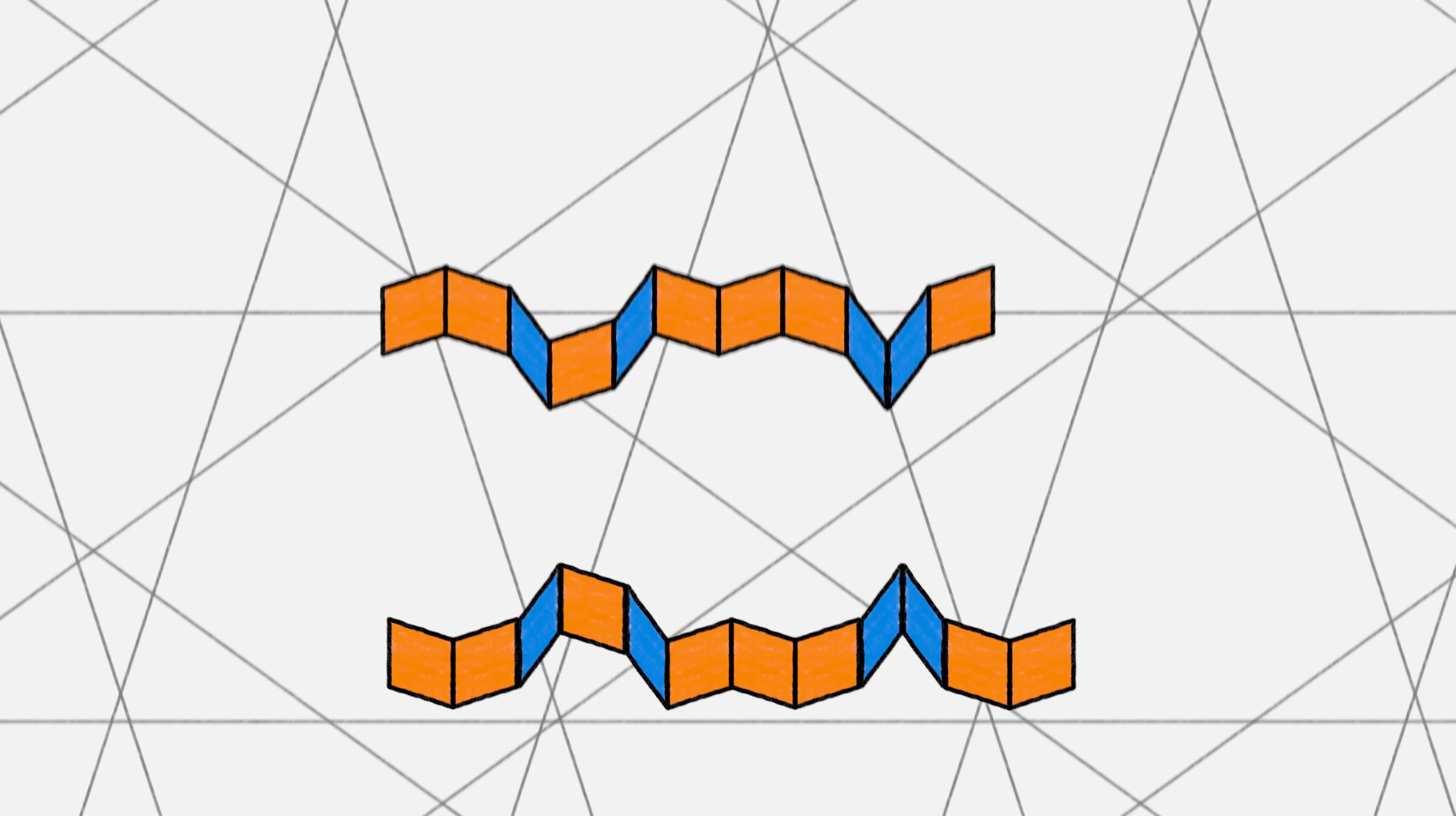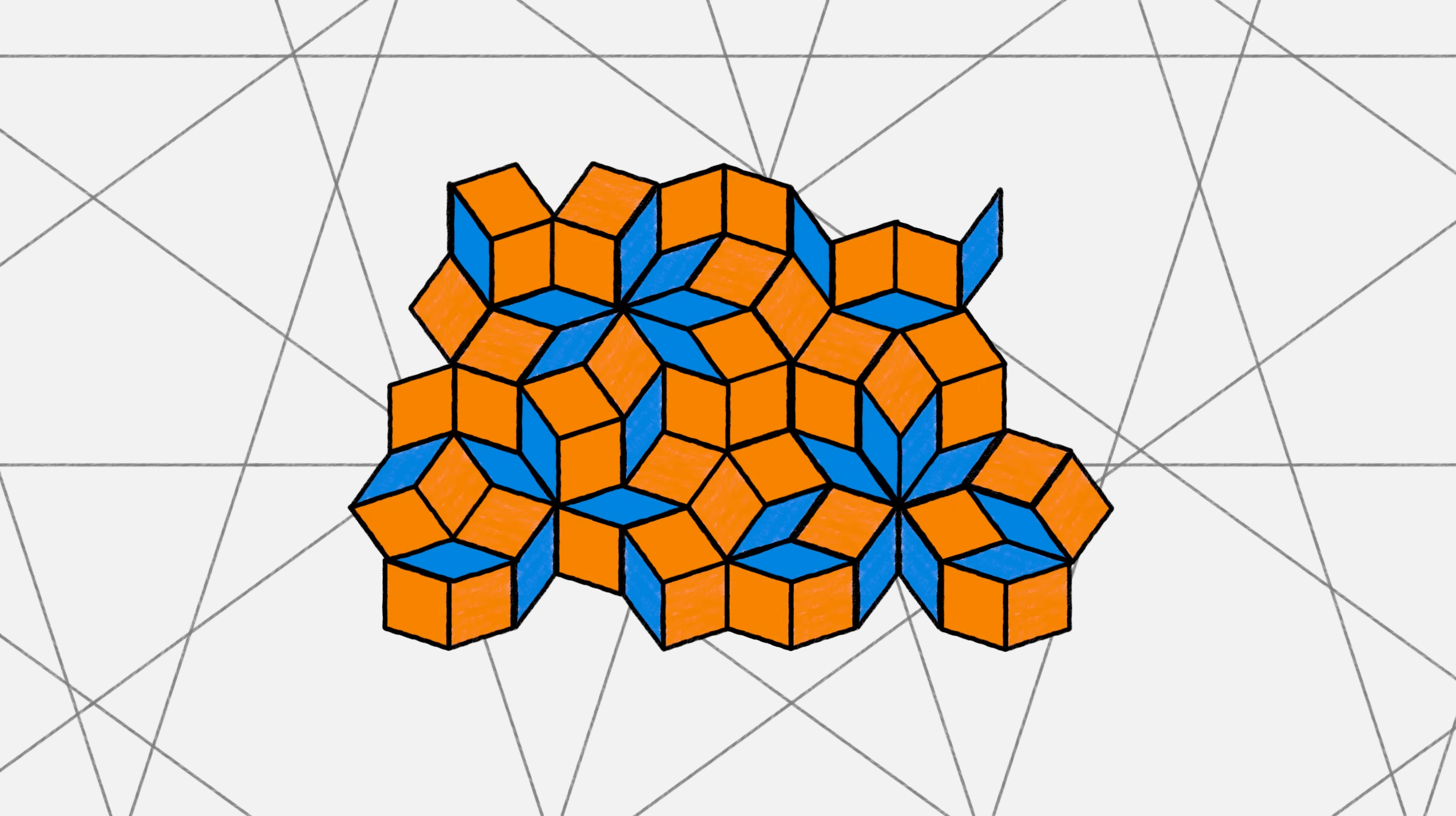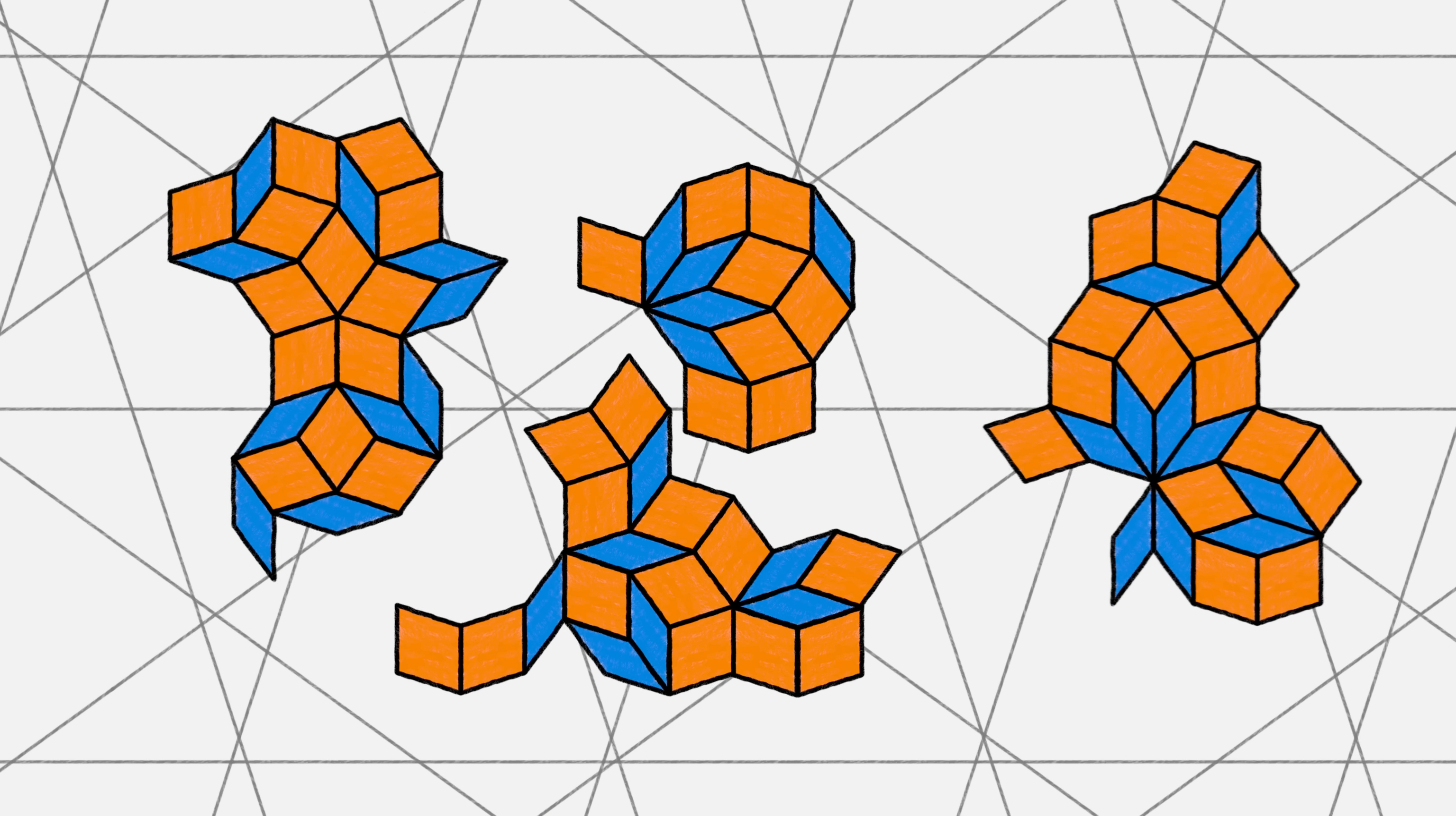And if you do the same for the next line up in the pentagrid, you get another ribbon, and another. And if you also do it for all the other lines in the other directions, all of the ribbons combined together make a Penrose tiling. You can also just add a tile to every intersection and slide them all together along the grid lines. Either way, you get a Penrose tiling.